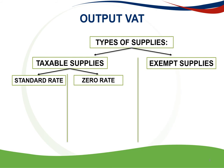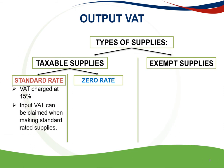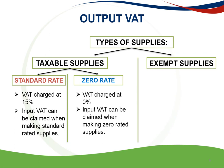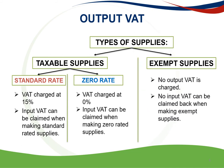The VAT Act provides for two types of supplies. The first is taxable supplies, which consist of the standard rate and the zero rate. The second is exempt supplies. For the standard rate, VAT is charged at 15%, which is currently the VAT rate in South Africa, and input VAT can be claimed when making standard-rated supplies. However, on zero-rated items, input VAT cannot be claimed when making zero-rated supplies, and VAT is charged at zero percent. For exempt supplies, you are not allowed to claim any output VAT because no output VAT is charged.